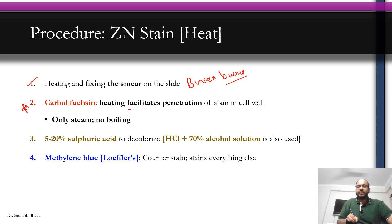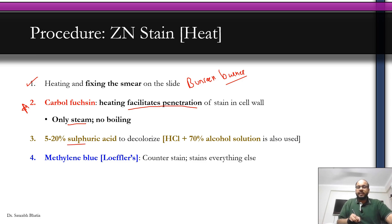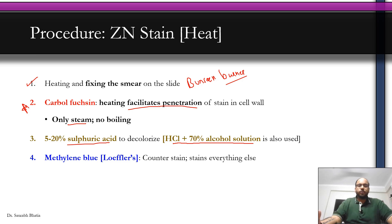Heating facilitates the penetration of the stain into the cell wall. When you heat, the mycolic acid helps the stain penetrate deeper. Remember, when heating the slide while it is in the stain, there should be only gentle steam — no boiling. If you boil the stain, the bacilli will die and you will only get fragments. The decolorizer is hydrochloric acid diluted in 70 percent alcohol, which is what is now used in nearly all labs.